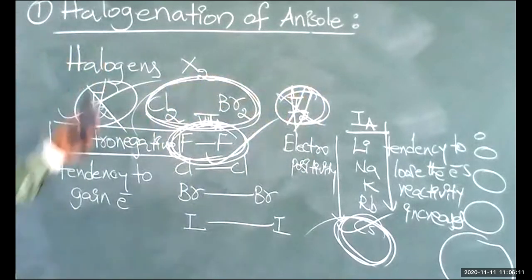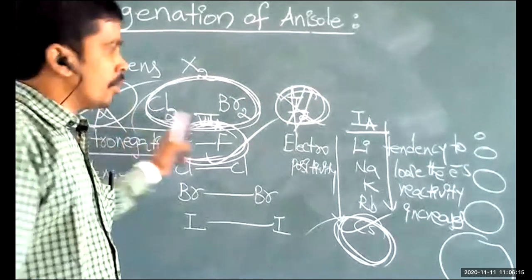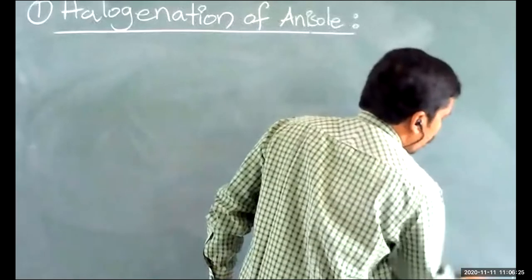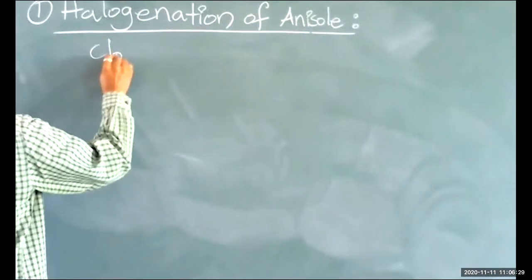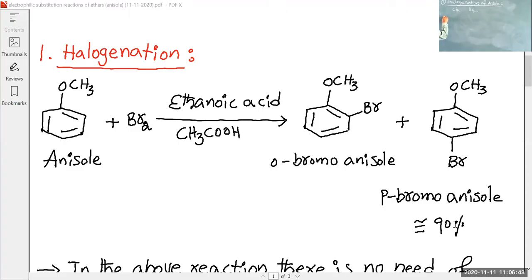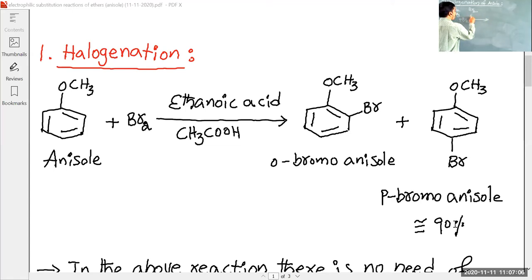Therefore, halogenation in the laboratory means either chlorination or bromination of anisole. When anisole (C6H5–O–CH3) undergoes bromination by reacting with bromine in the presence of ethanoic acid (CH3COOH), an electrophilic substitution reaction occurs.